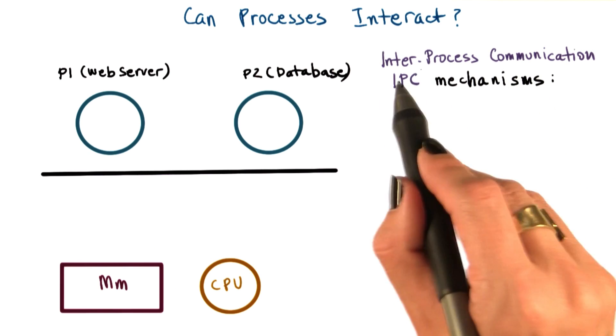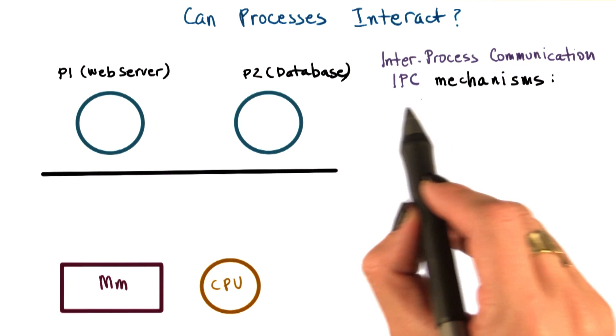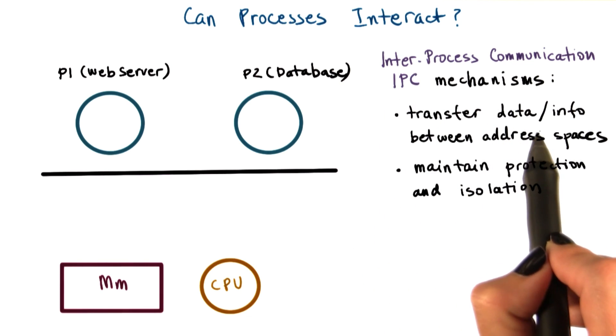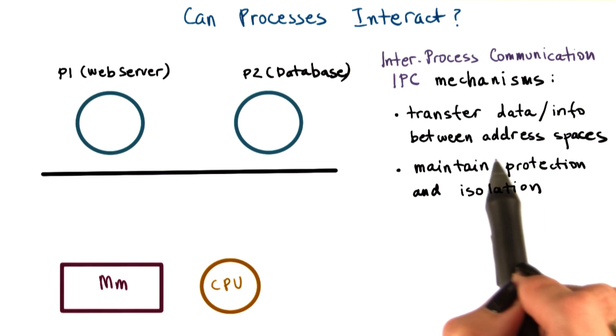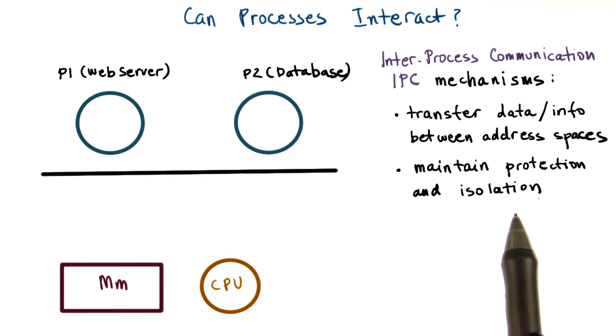These kinds of mechanisms are called interprocess communication mechanisms, or we refer to them as IPC. The IPC mechanisms help transfer data and information from one address space to another, while continuing to maintain the protection and isolation that operating systems are trying to enforce.